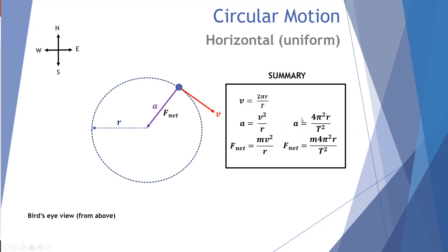Here's a summary of all equations for an object moving in horizontal uniform circular motion: one equation for speed, two equations for acceleration, and two equations for net force. The net force and acceleration point towards the center, while the speed or velocity is tangent to the path, perpendicular to the radius.